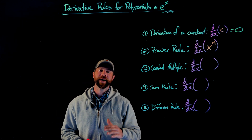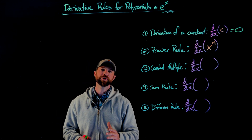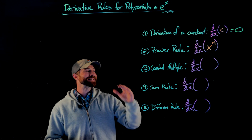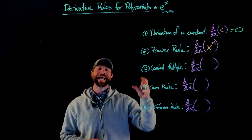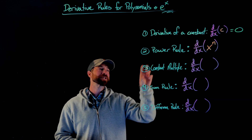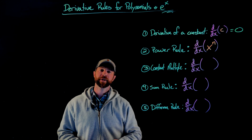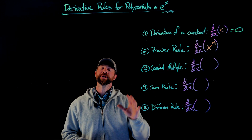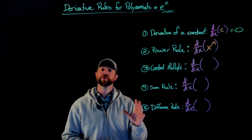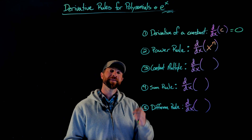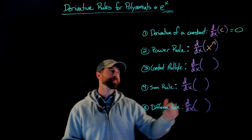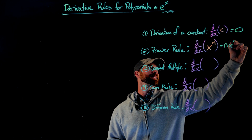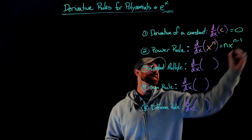Our second rule, the power rule, is by far the most useful rule you'll use in all of calculus. This is how you differentiate x to the n, where n is any real number. The derivative of x to the n power equals n times x to the n minus one.